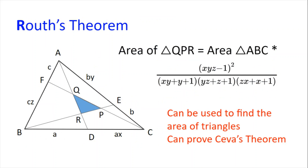Next, we have R for Routh's theorem. For Routh's theorem, we have triangle ABC, and AD, BE, and CF are cevians of the triangle. Then Routh's theorem tells us that the area of triangle PQR is equal to the area of triangle ABC times a factor, where AF is C, FB is CZ, BD is A, DC is AX, CE is B, and EA is BY.